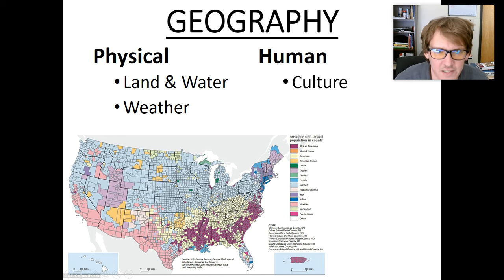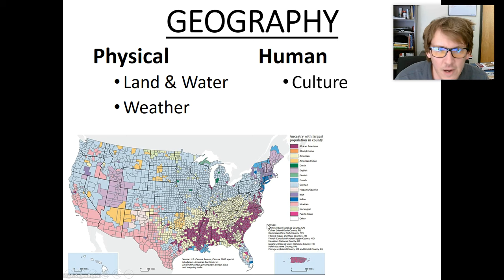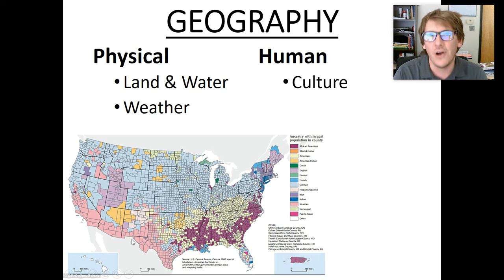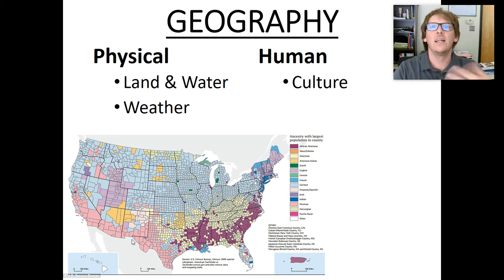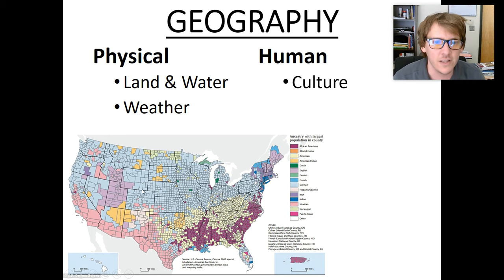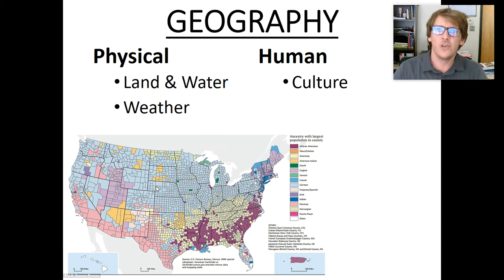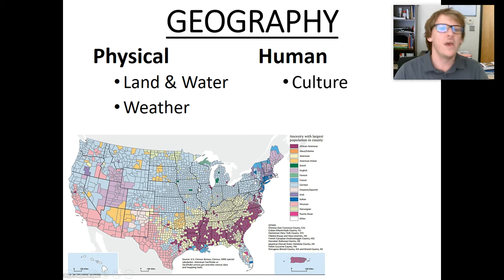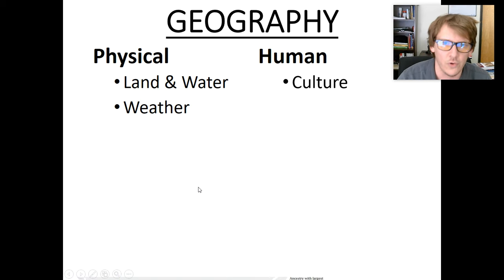Germans throughout here. This area just defines itself as American. Over here you'll notice Mexican-Americans are the majority — that makes sense because this area is on the border of Mexico. So the map is a tool to help us understand differences and lead us down the road. It's also a great tool to help us communicate. You can quickly look at this map and make sense of America without a master's degree in American history.